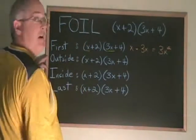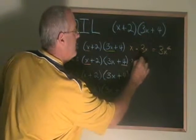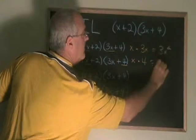Then outside. The outside terms are the x here and the 4 there. x times 4 equals 4x.